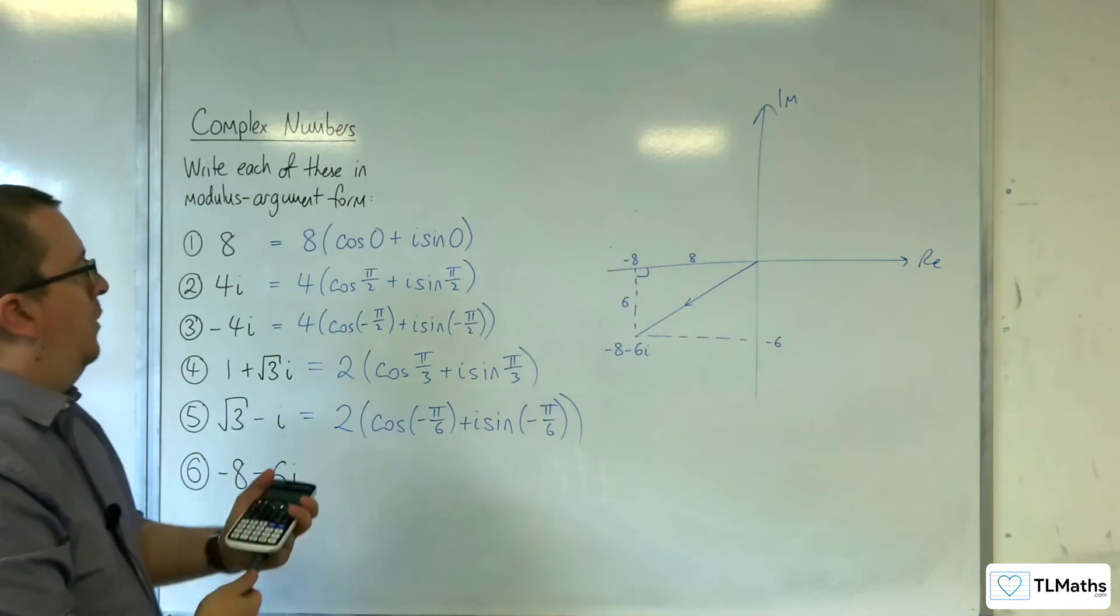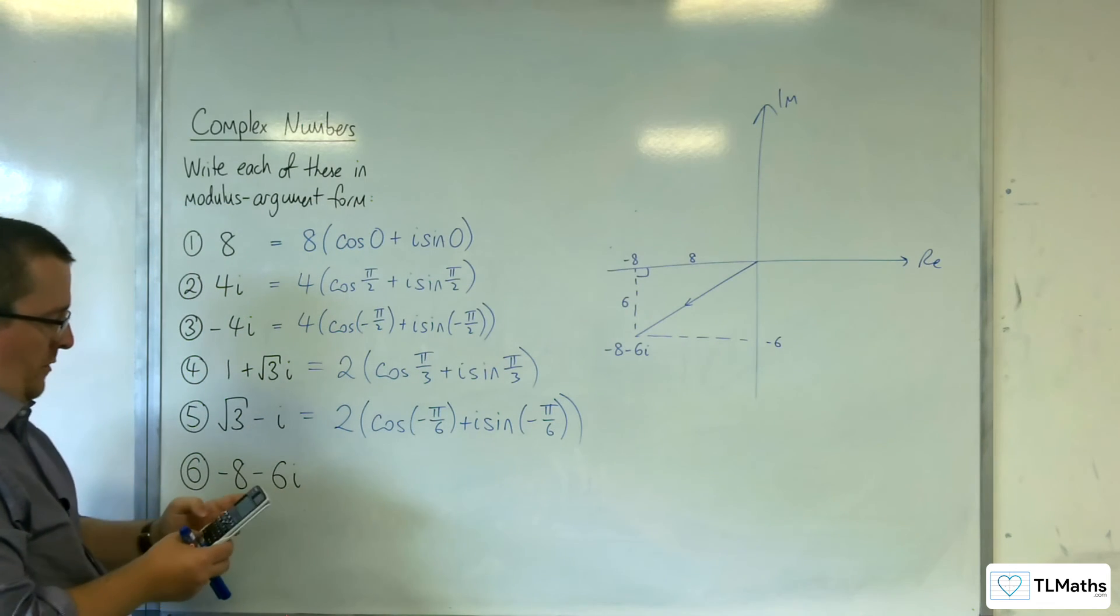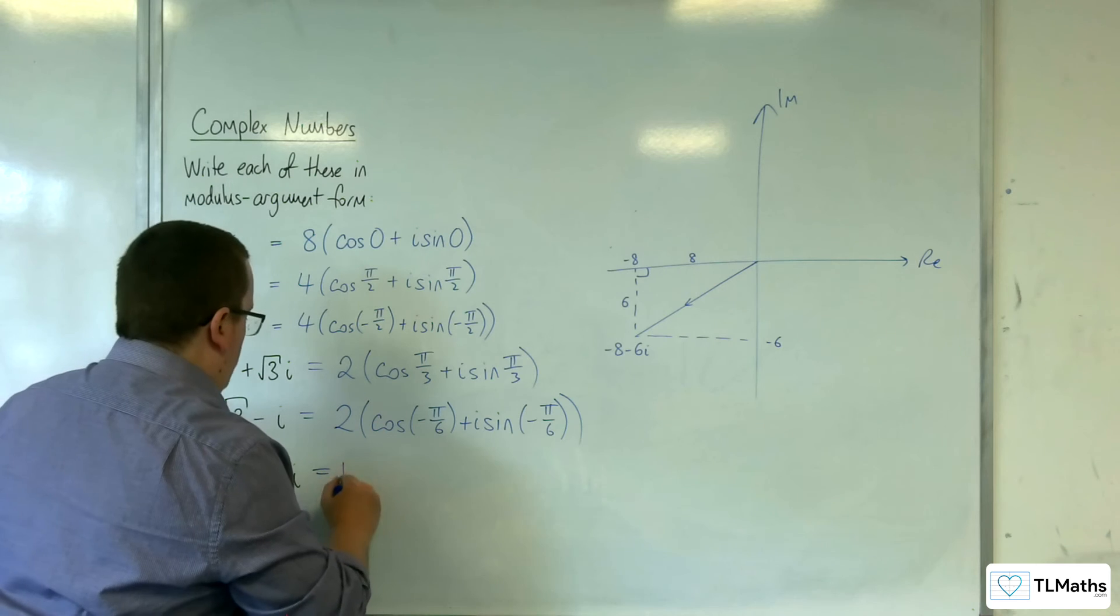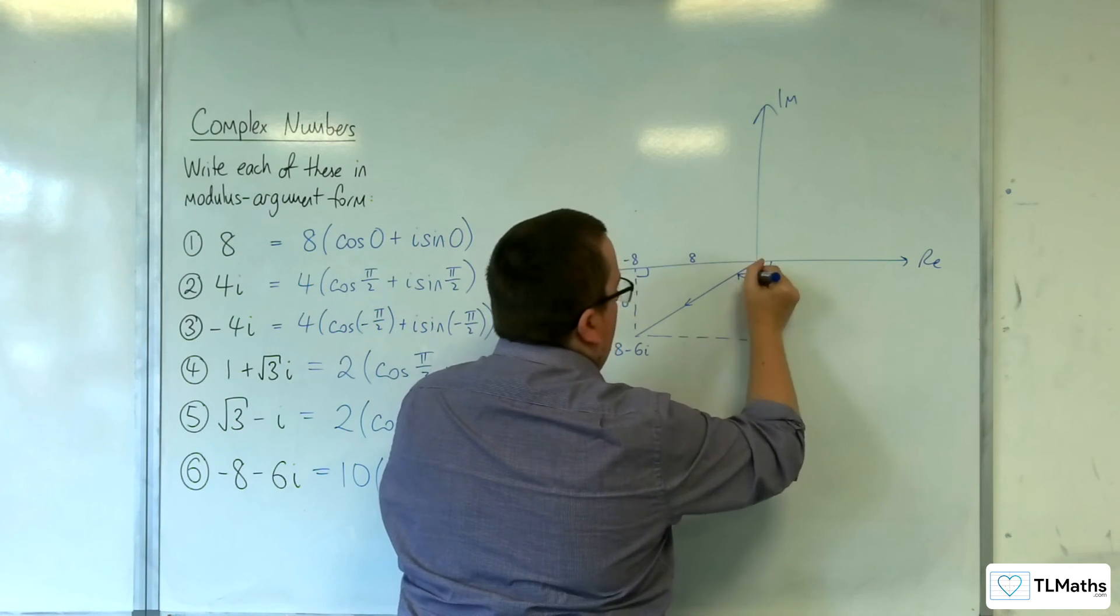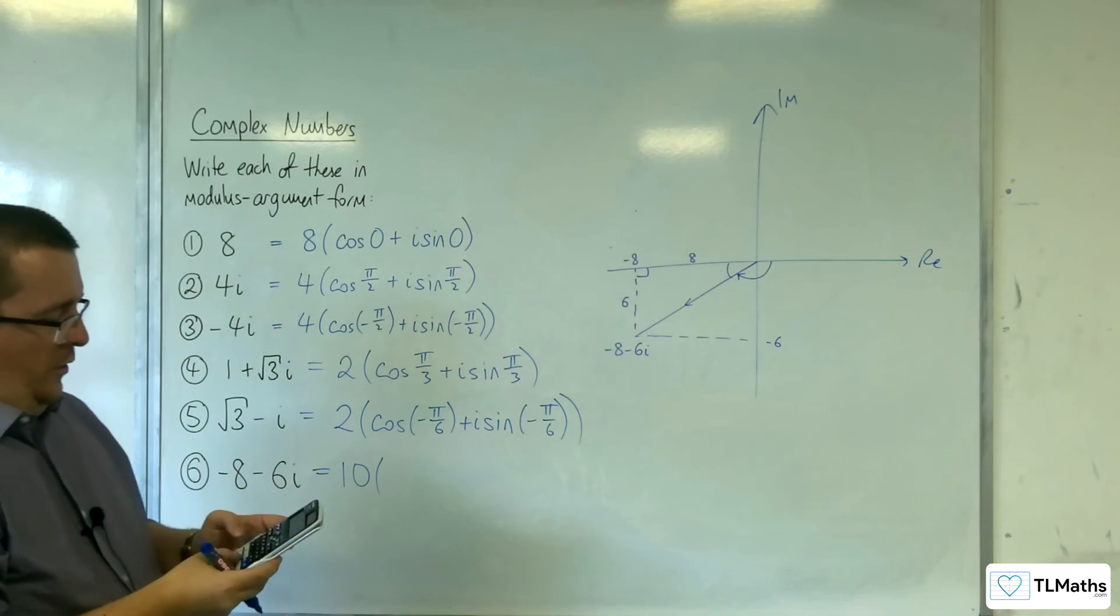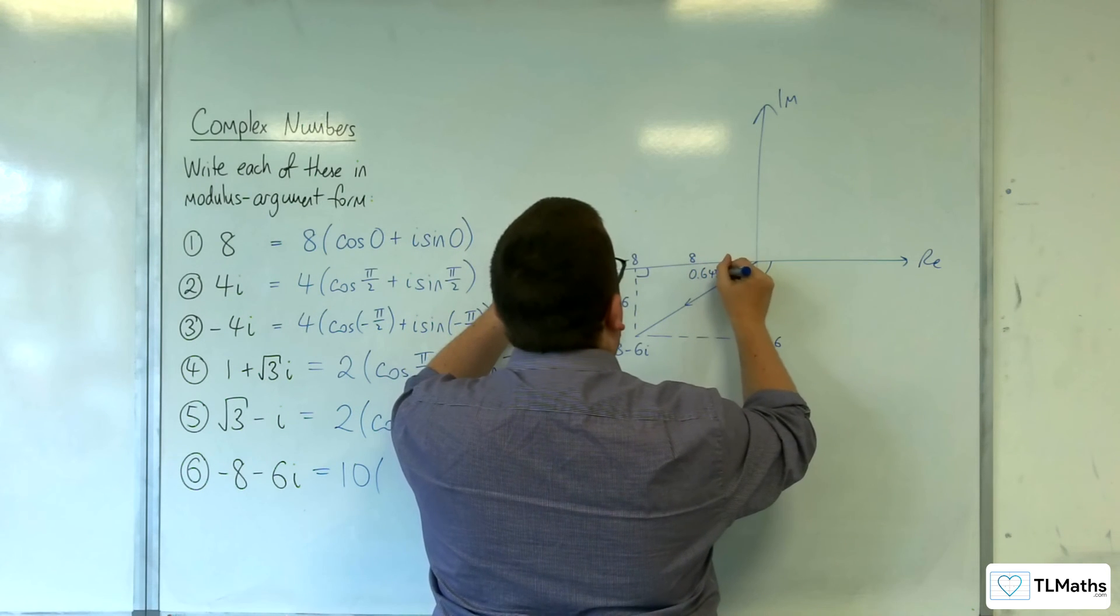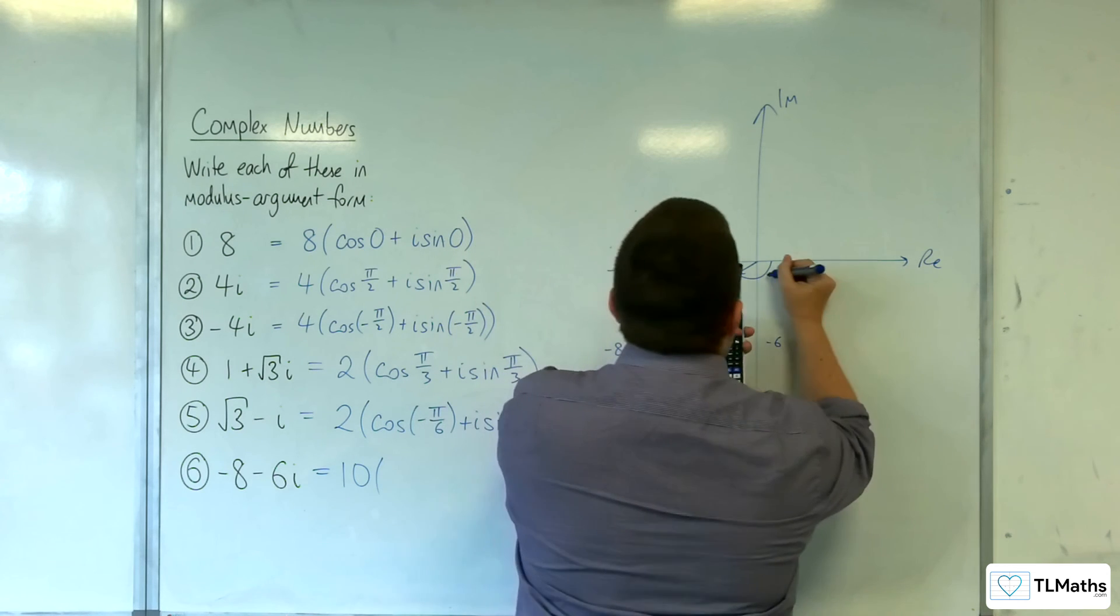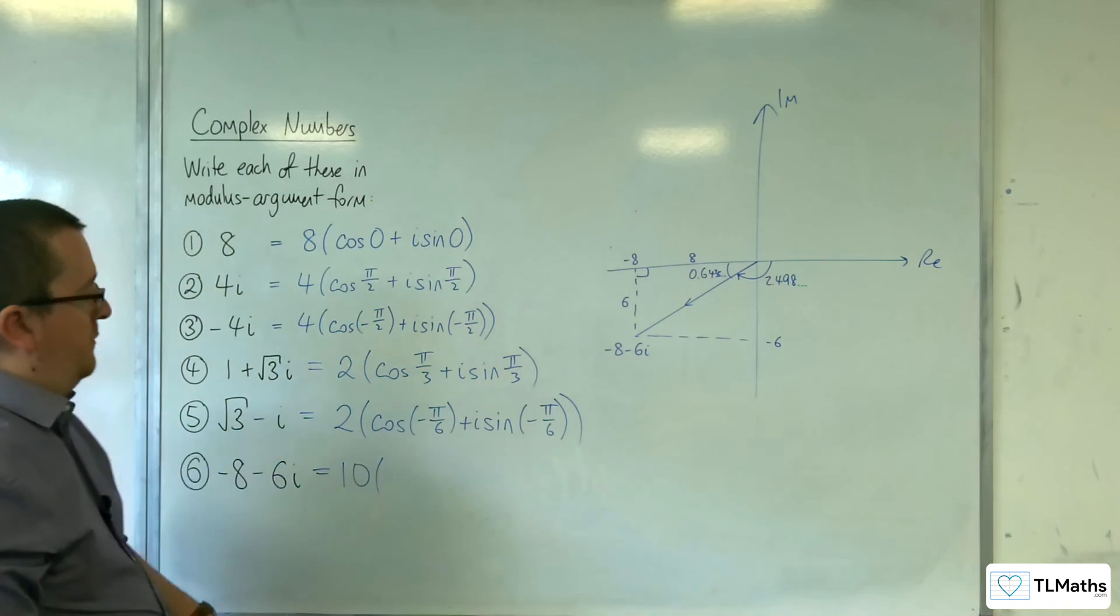What have we got? The square root of 8 squared plus 6 squared—is that 10? Yep. So make this 10. We just need that angle. We'll work out that angle first: inverse tan of 6 over 8, so that's 0.6435 etc. Subtract that from π, and we get 2.498 etc. So we've got the negative of that.